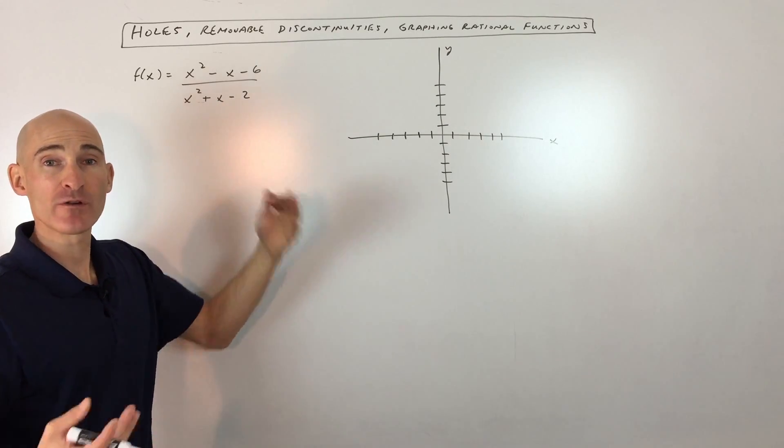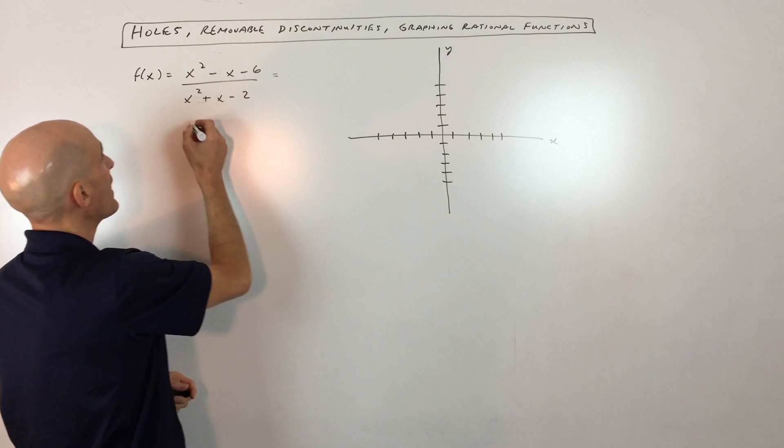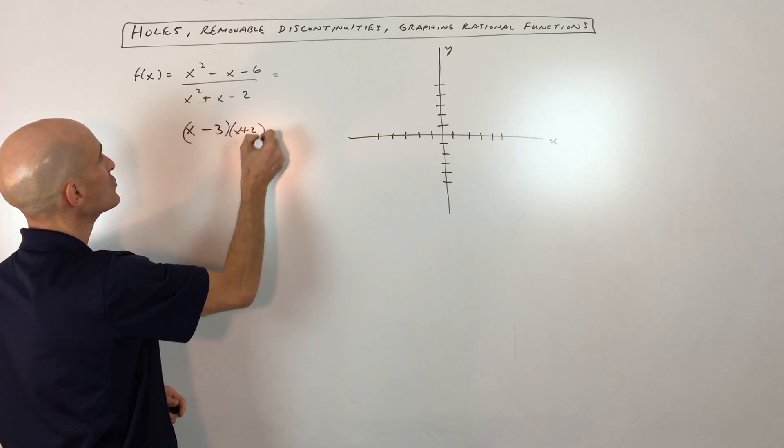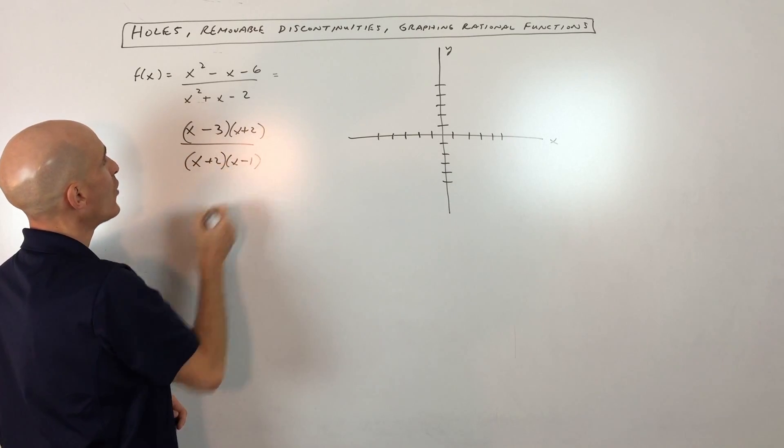You want to factor the numerator and factor the denominator. That's the first step. So I would go ahead and factor this so we get x minus 3 times x plus 2 over x plus 2 times x minus 1.